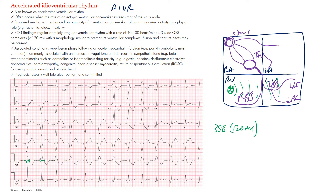When the QRS is 120 milliseconds or more, we consider it wide, because it's not transmitting down the normal conduction pathway. There may also be widening due to a pre-excited pathway or aberrant conduction. The proposed mechanism is enhanced automaticity.